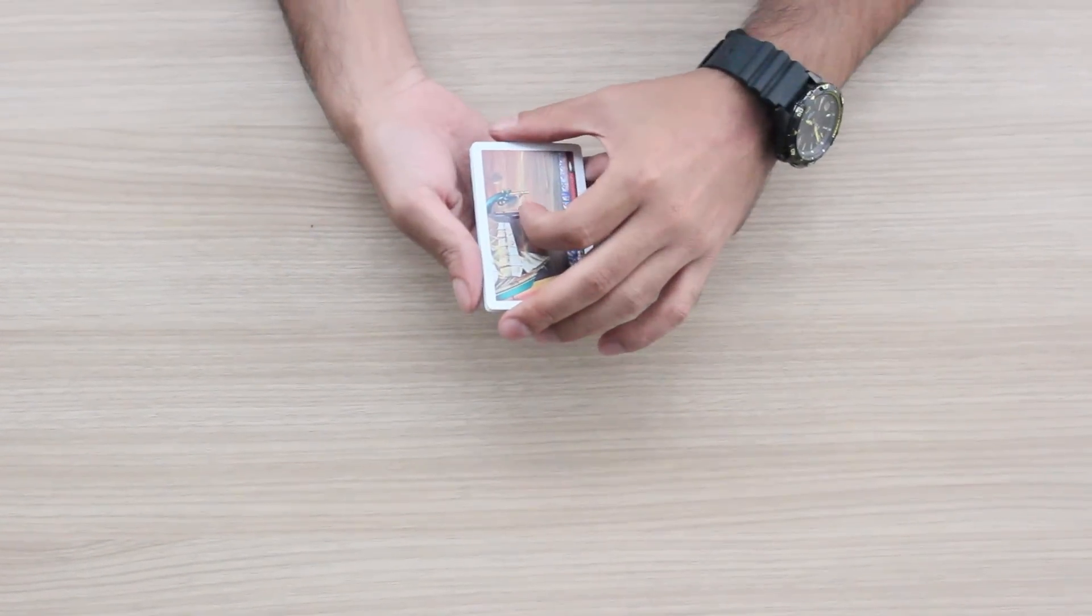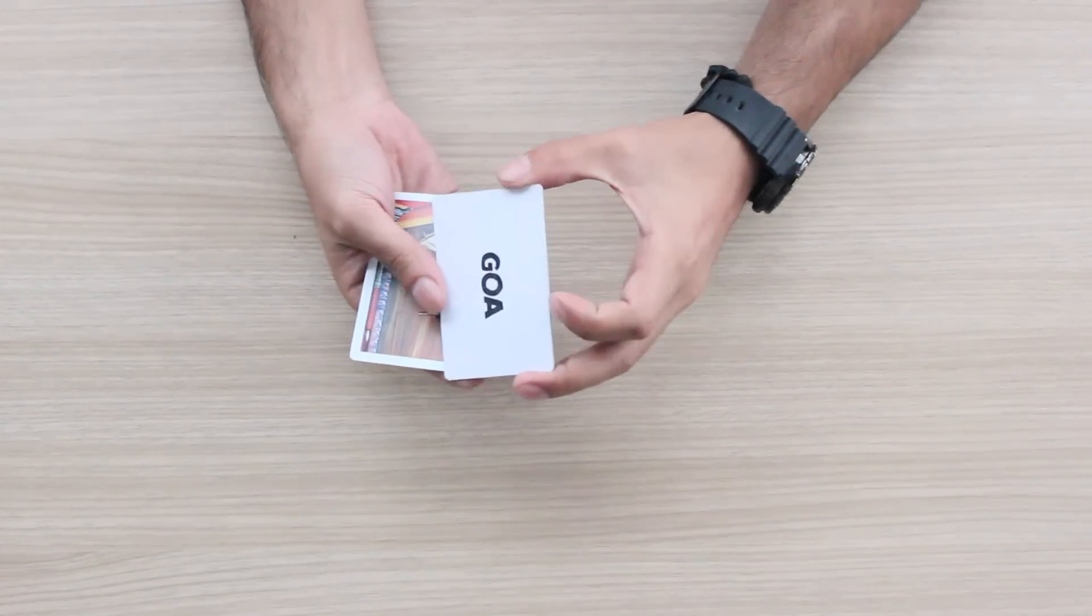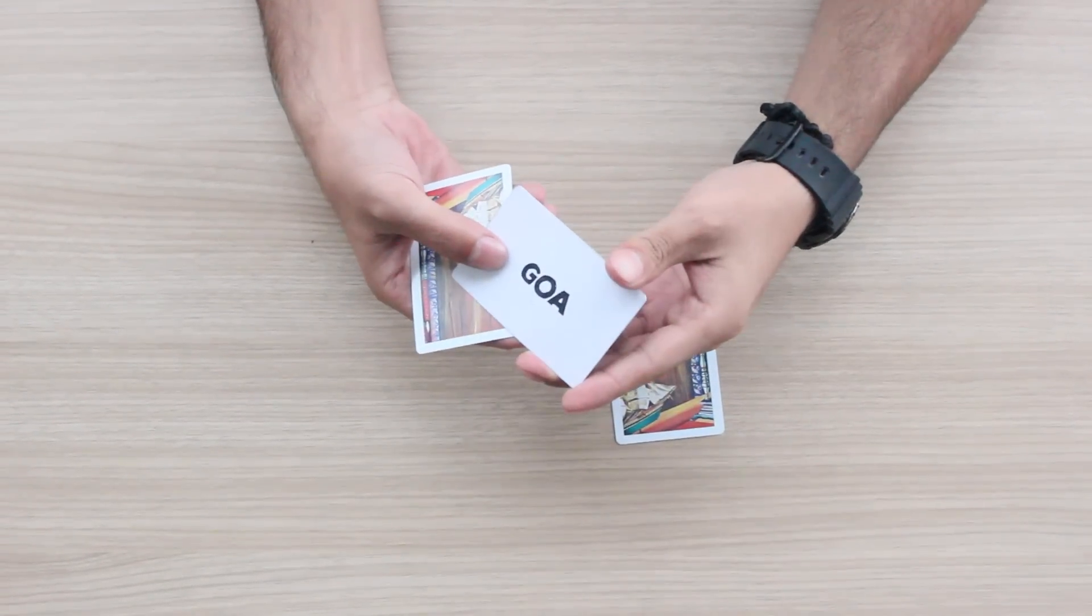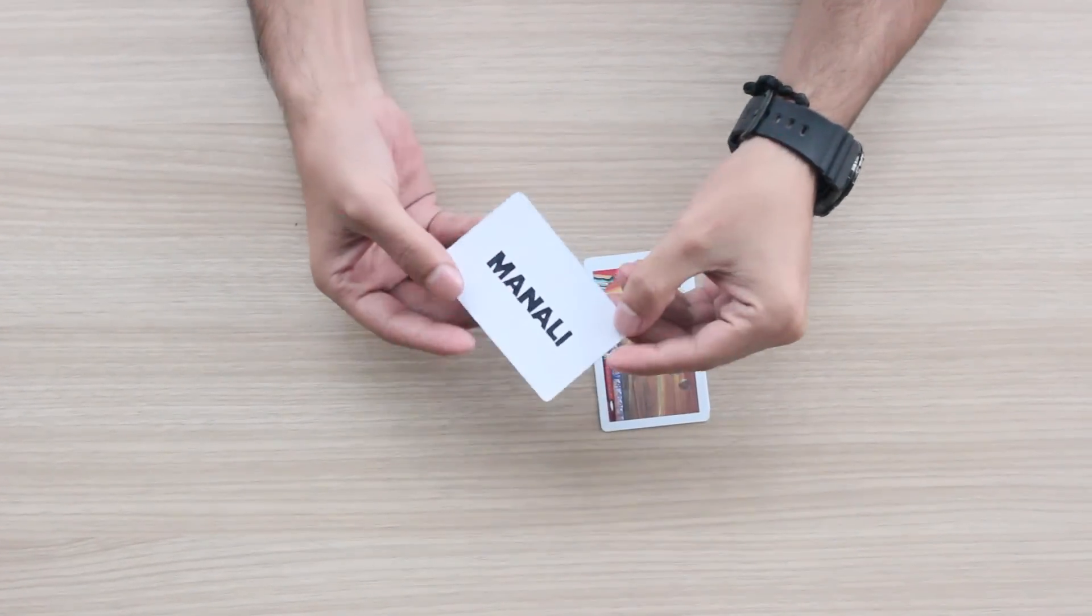He then takes the three cards and looks at them. The first card reads Goa. Then he opens the second card which reads Goa again. And the third card which reads Manali.